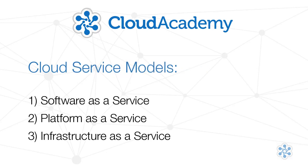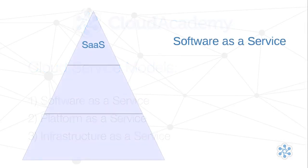Whatever the deployment model is, cloud applications can be run according to three different service models under the well-known acronyms SaaS, PaaS, and IaaS. Generally speaking, they refer to approaches that progressively save you the burden of low-level administration at the price of reduced flexibility. Let's introduce them shortly before going into further details in another lecture. The top-level cloud computing model is SaaS. Have you ever used Gmail, Salesforce, Basecamp, Hootsuite, or one of the other countless software solutions like these? They're all SaaS — that is, Software as a Service. You get a complete software package ready to use, on demand, at a monthly or yearly fee. However, you can't customize it more than the provider allows.